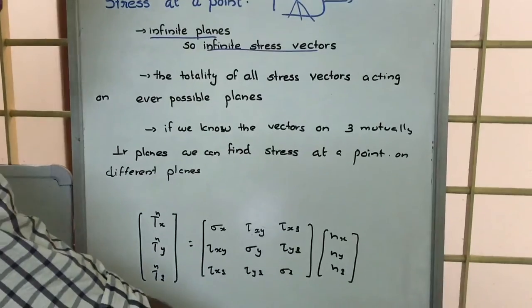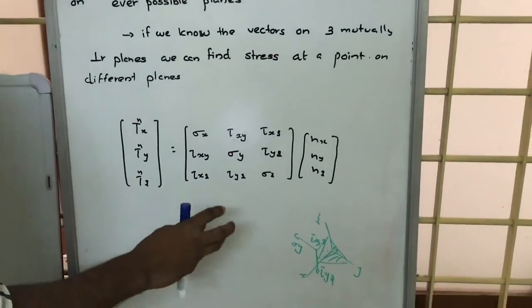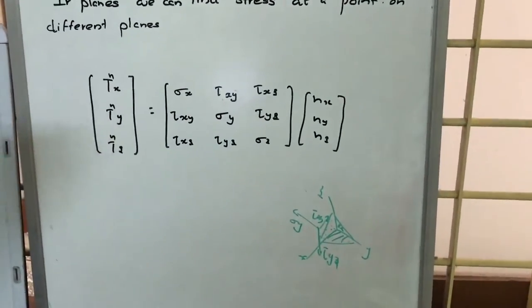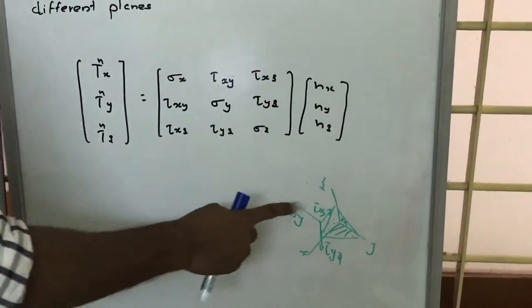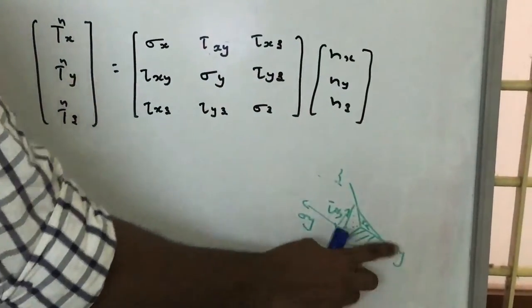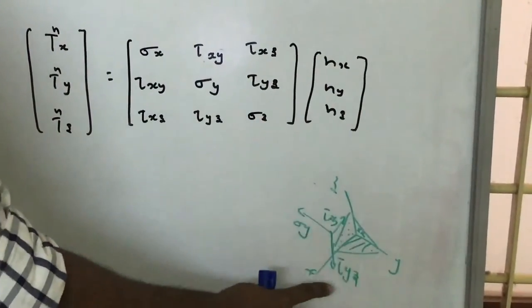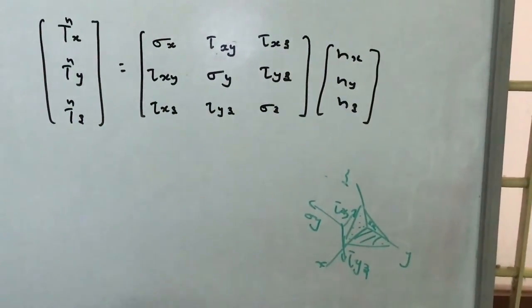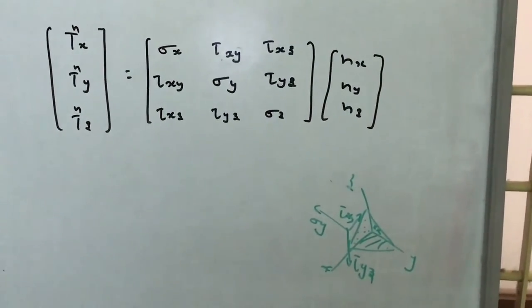And here, if we have a point and if we know the stresses at three mutually perpendicular planes here, let us say, zy is one plane, xz is another plane, xy is another plane. So these three planes are perpendicular.